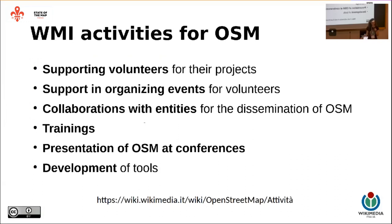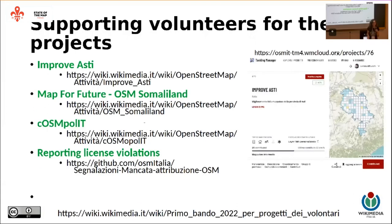The local chapter, Wikimedia Italia, does different kinds of activities to support OpenStreetMap in Italy: supporting volunteers for their projects, organizing events, collaborations with entities — because it's easier to collaborate as an institution than as an individual — trainings, presentations at OpenStreetMap conferences, and development of tools.